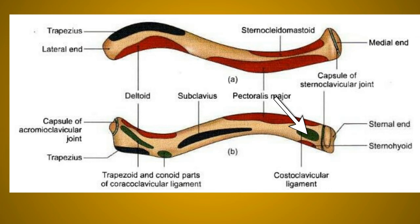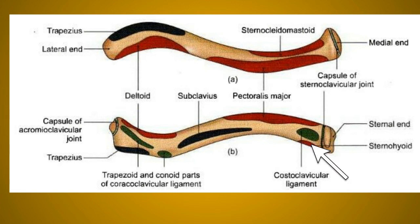The oval impression on the inferior surface of the medial end gives attachment to the costoclavicular ligament. The subclavian groove gives attachment to the subclavius muscle, and the margins of the subclavian groove give attachment to the clavipectoral fascia. The posterior surface close to the medial end gives origin to the sternohyoid muscle. The subclavian vessels and cords of the brachial plexus pass towards the axilla lying between the inferior surface of the clavicle and the upper surface of the first rib.